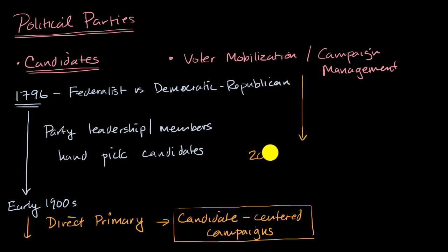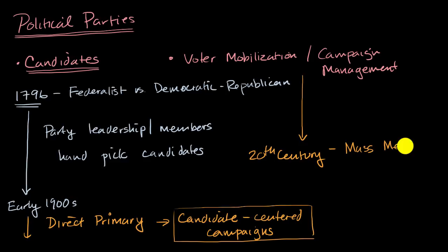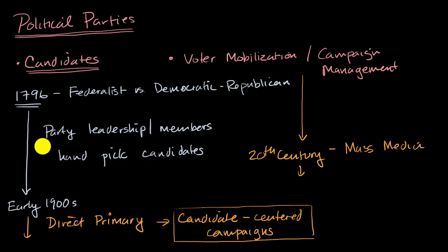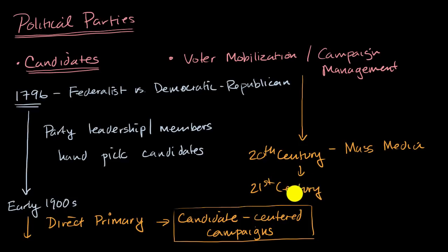So if we go to the 20th century, you have significant use of mass media — TV, newspaper, radio. Newspaper has always been a factor in political elections, going all the way back to the founding of the United States. And then as you go into the 21st century, things have gotten a lot more targeted. Obviously, you can have email campaigns and you can start to leverage social media.